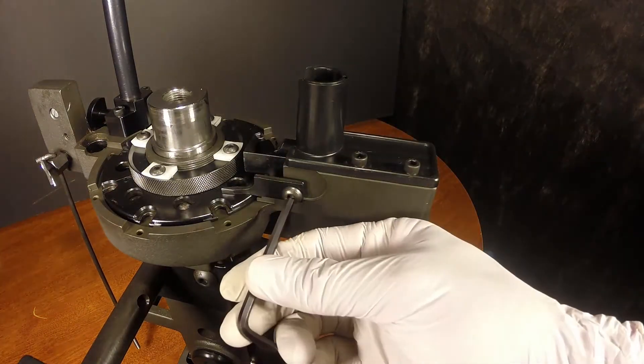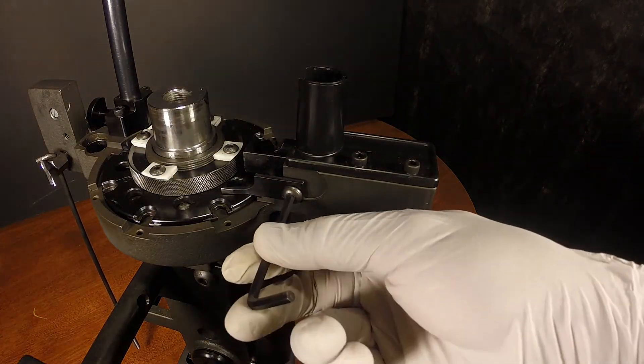Reposition and tighten the ejector tab. Ensure the tab is not touching the face of the shell plate.